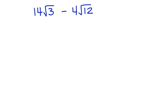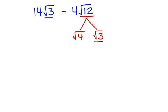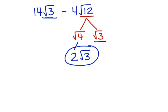Let's look at another one: 14 square roots of 3 minus 4 square roots of 12. Notice that we don't have like terms. Let's factor the square root of 12 into two factors — we can do that with the square root of 4 times the square root of 3. Right away you can see that square root of 3 and square root of 3 are alike. The square root of 4 simplifies to 2, so the square root of 12 simplifies to 2 square roots of 3. Now let's put that back into the original problem.